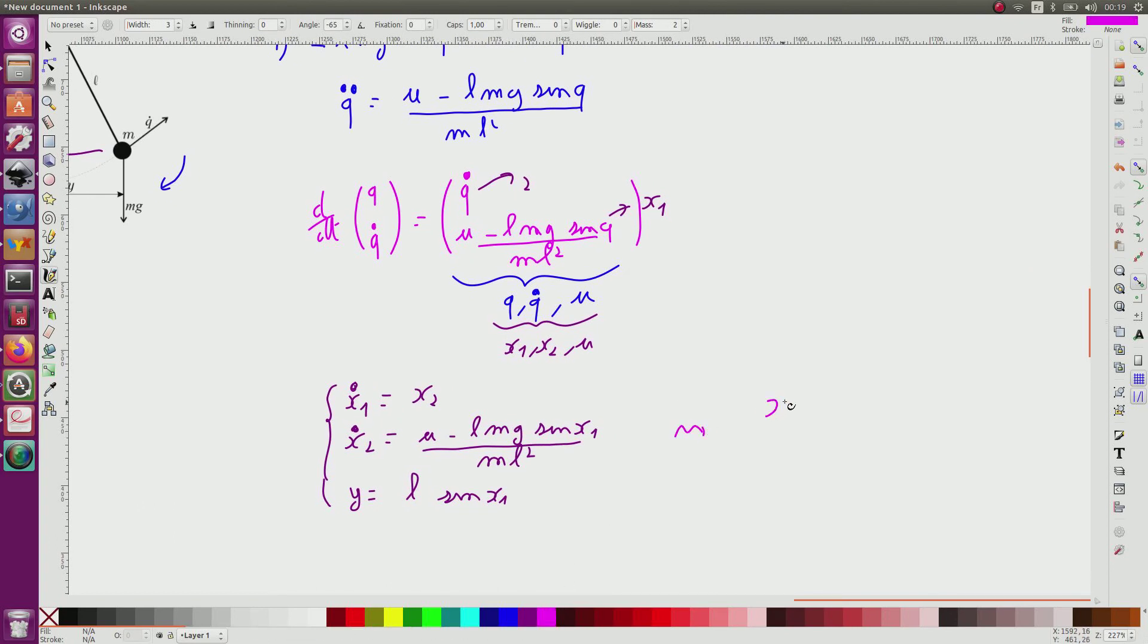So we can see that I have something of the form X dot equal to F of X,U, so this corresponds to F of X,U, and Y equal to g of X, so it corresponds to a state equation.